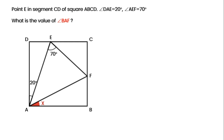Let's check this problem. Angle DAE is 20 degrees. Angle AEF is 70 degrees. Obviously, 20 plus 70 is 90 degrees. If we can place these two angles in the same triangle, maybe it will help us solve this problem.